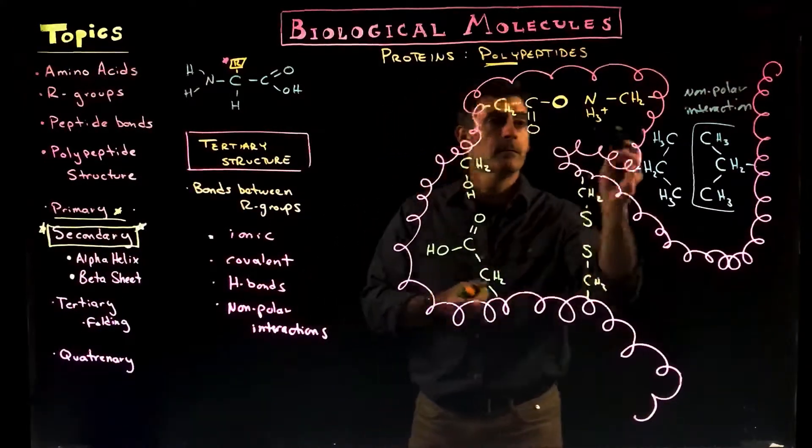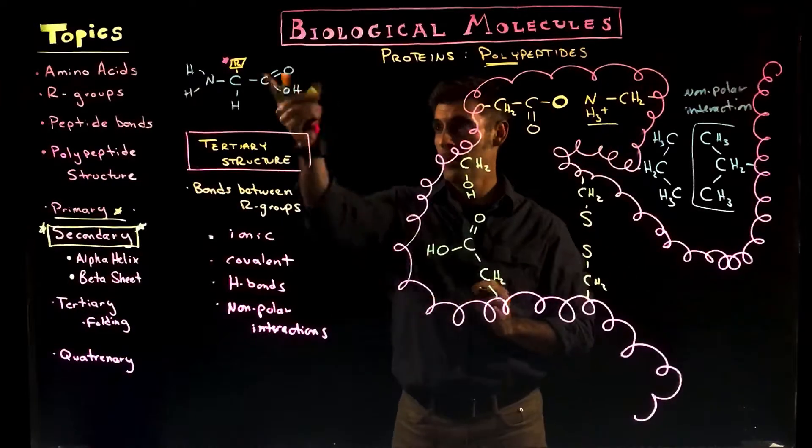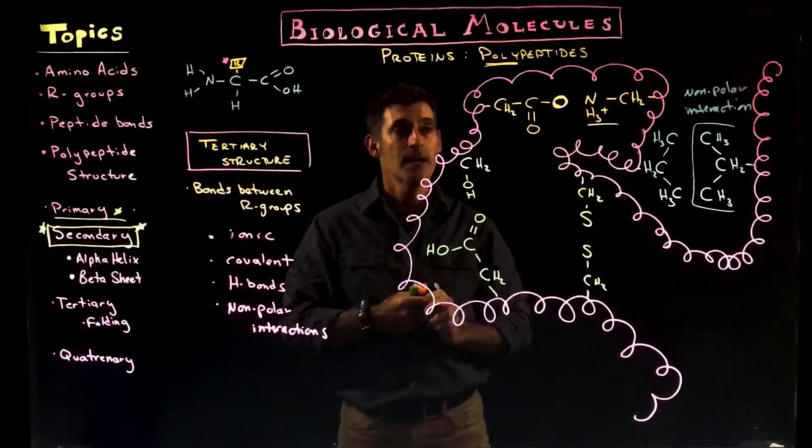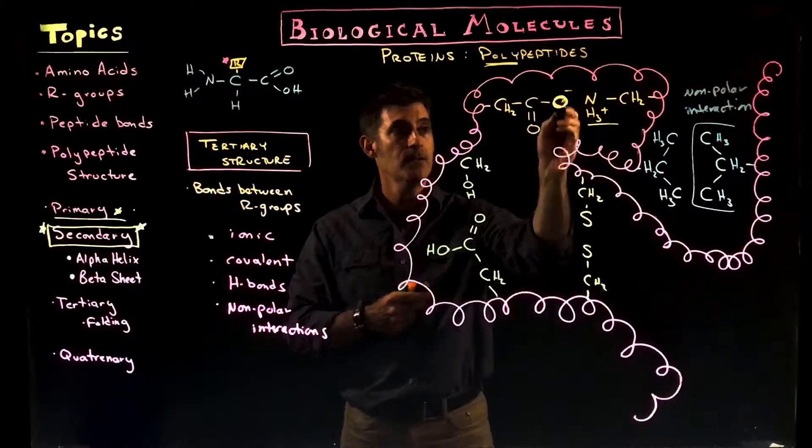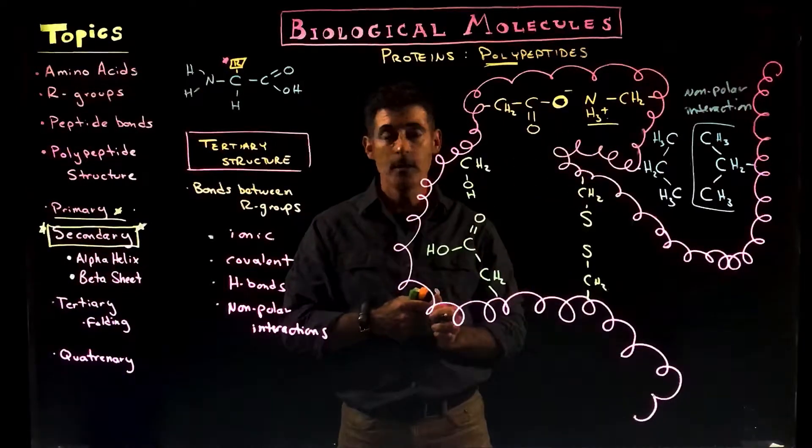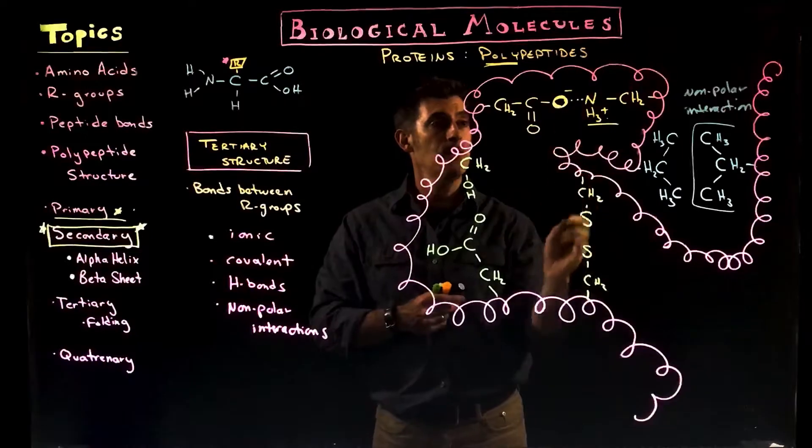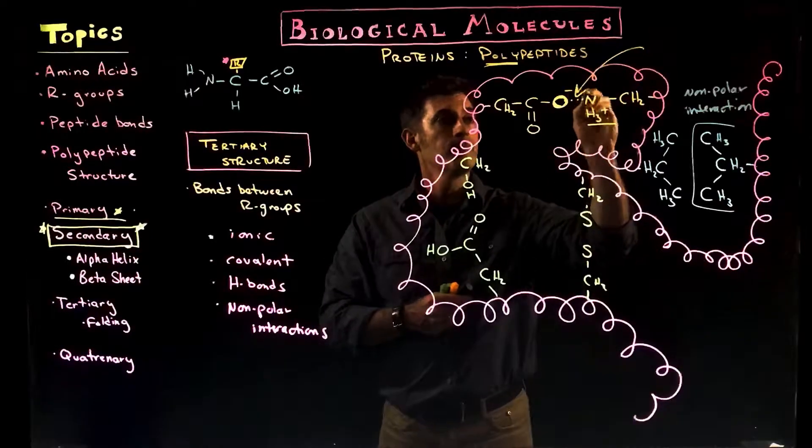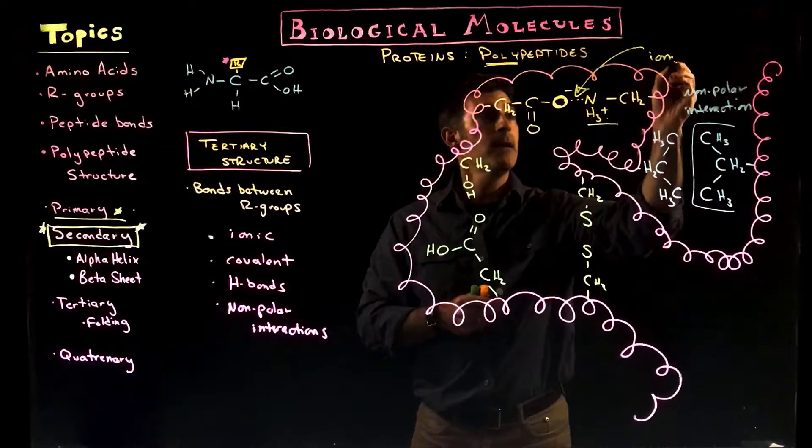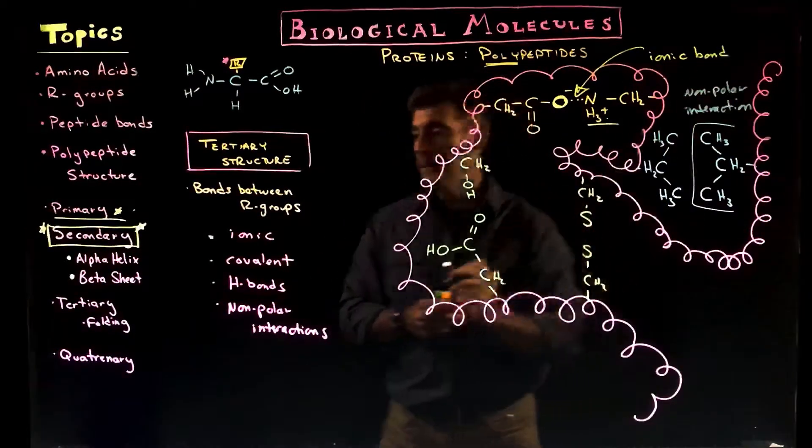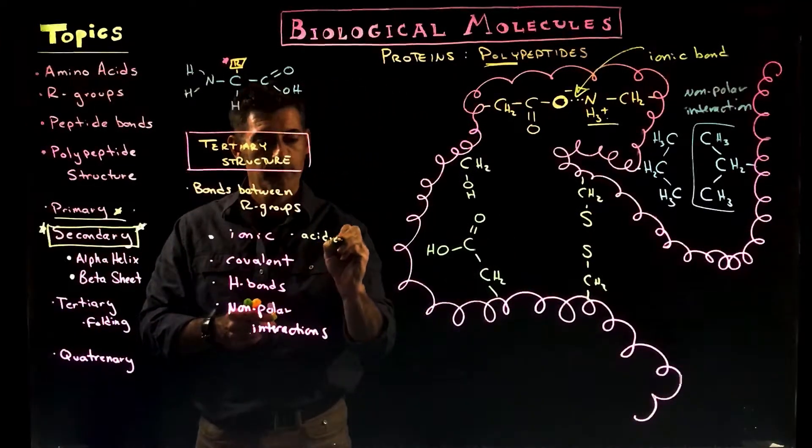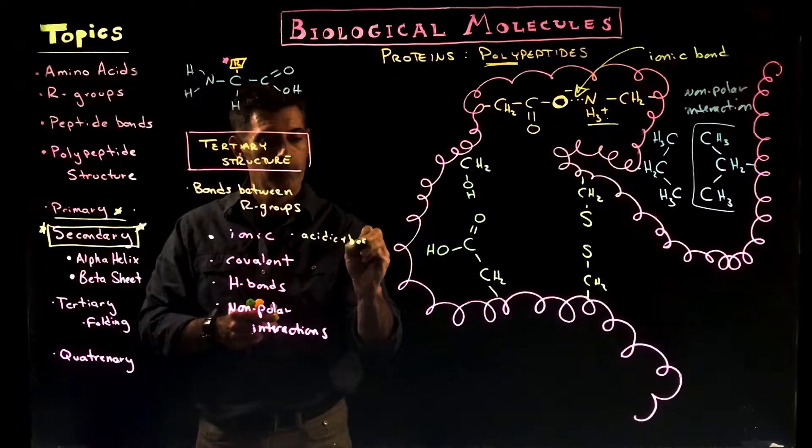Here we have one of the R groups of an amino acid—this is the basic R group, and here's the acidic R group. So this one's going to have the negative charge because it may have lost a proton. This one is a positive charge because it gained a proton. So there's going to be an attraction between the negative and the positive charge. They're going to pull each other together. That would form an ionic bond. So ionic bonds are going to be typically between the acidic and basic R groups.